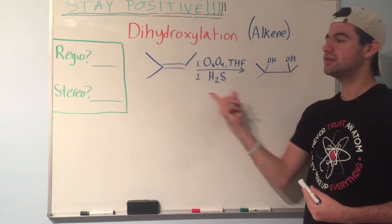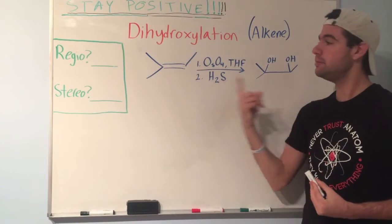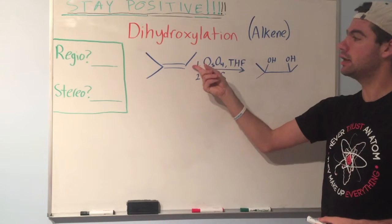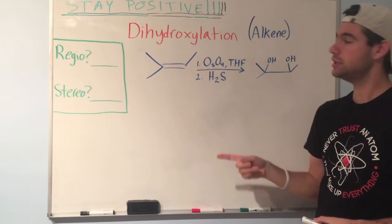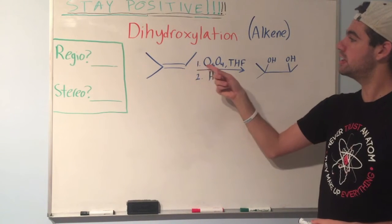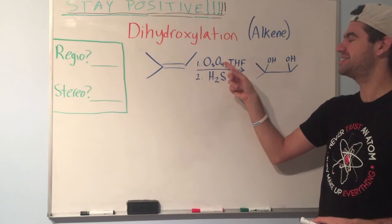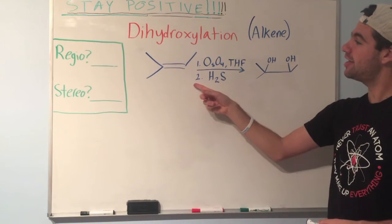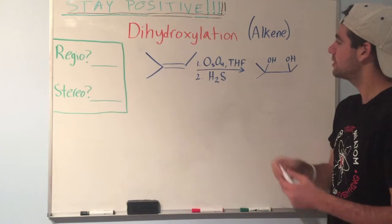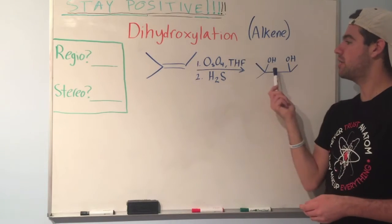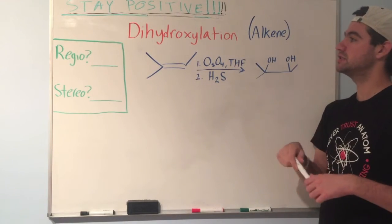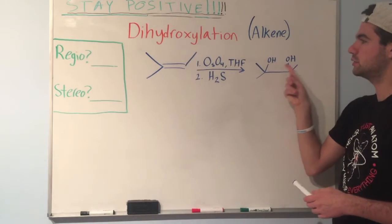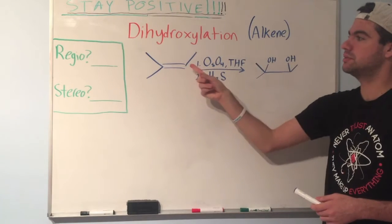Let's take a look at the general scheme. You have an alkene, and you're going to react it in a two-step reaction. First is osmium tetroxide and THF. The second step is H2S. And what you end up with is a product that has two hydroxyl groups across the pi bond.